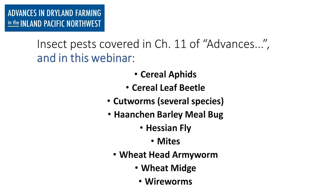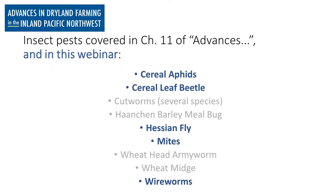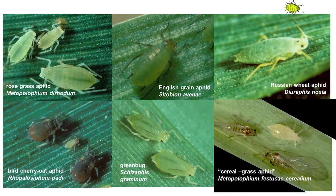This is a list of insects covered in Chapter 11 of Advances. Today in this webinar, we'll cover those that are highlighted — these five. The rest you can read about in Advances. We'll start with the cereal aphids. The Northwest has a number of species of aphids that affect wheat and cereal production systems.